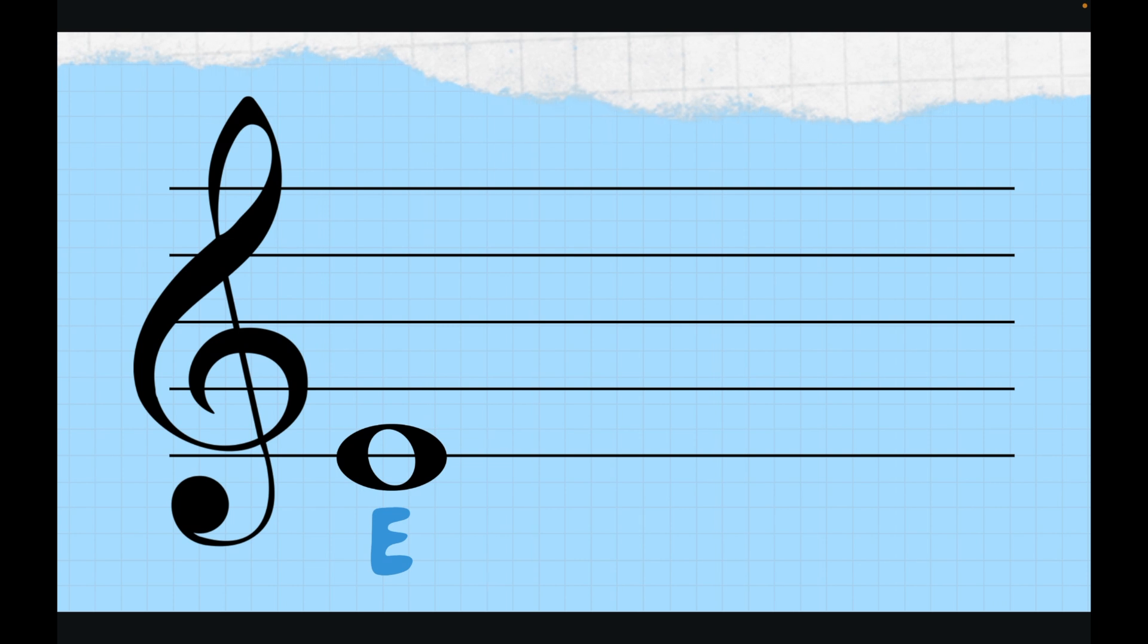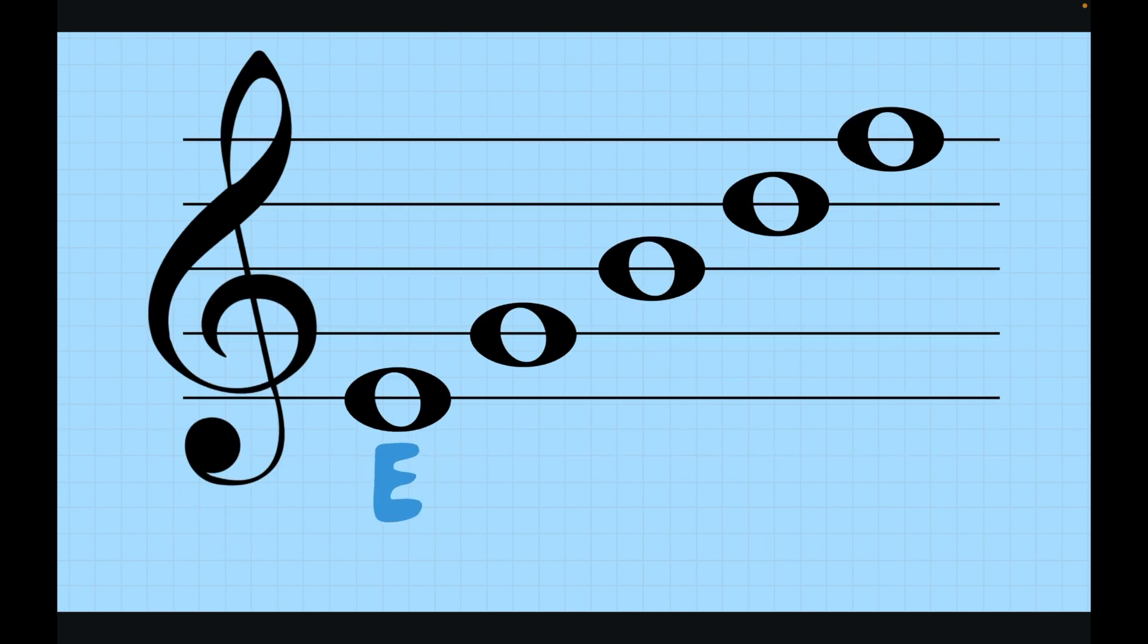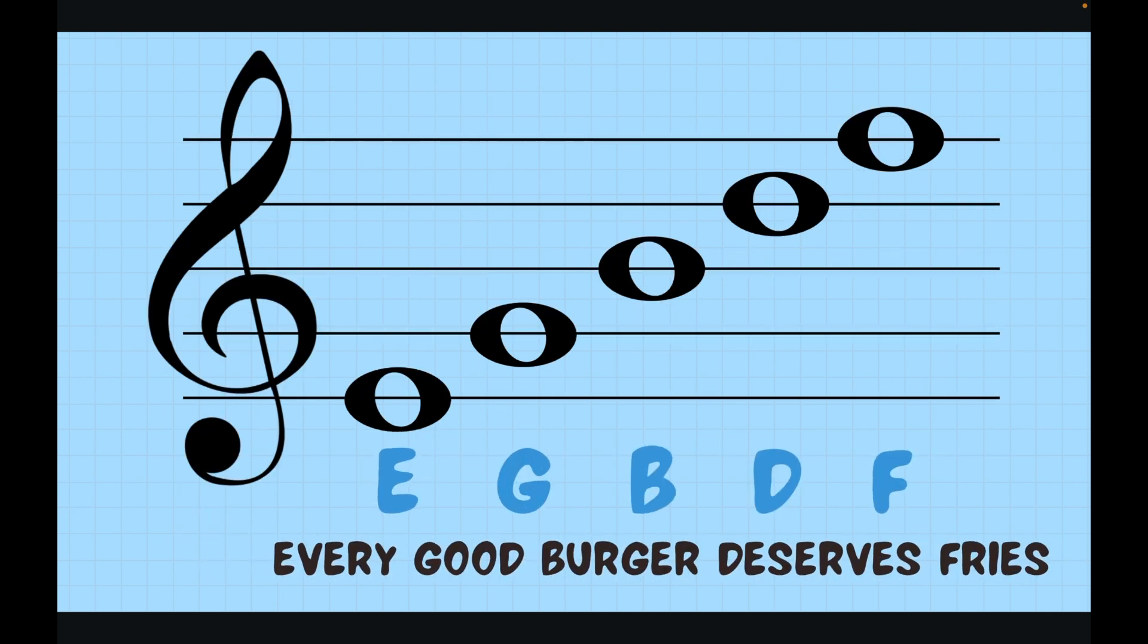Our first note is the note E, then we have G, then B, D, F. Unlike our spaces where space rhymes with face, this one is going to have an actual saying that goes along with it. Our saying is going to be every good burger deserves fries. Super easy to remember because of course every good burger deserves some really good fries to go with it.